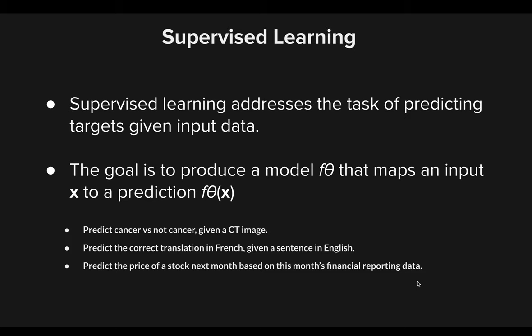Now let's talk about supervised learning — one of the three major types of machine learning, alongside unsupervised learning and reinforcement learning. We will talk about those in later episodes, but supervised learning will be the core of what we're dealing with for now. Supervised learning addresses the task of predicting targets given input data. The goal is to produce a model F₀ that maps an input X to a prediction F₀(X).